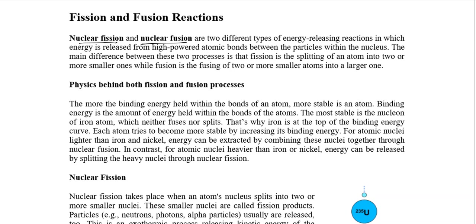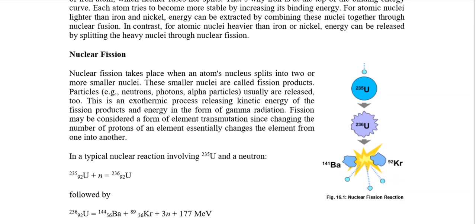When nuclei are fused together it is called a fusion reaction, and when they split it is called a fission reaction. Nuclear fission takes place when an atom's nucleus splits into two or more smaller nuclei. These smaller nuclei are called fission products. Particles such as neutrons, photons, and alpha particles are usually released. This is an exothermic reaction which releases a huge amount of energy, most of it in the form of kinetic energy.